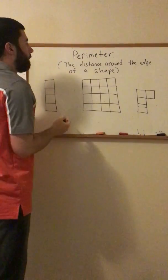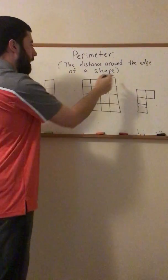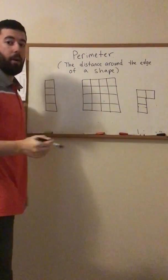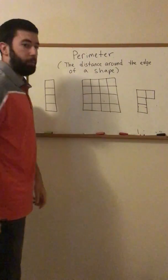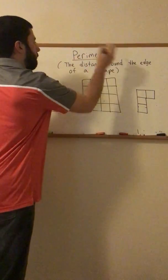The perimeter is the distance around the edge of a shape. That's around the edge. The area is when we look inside the shape. Right now we're dealing with perimeter.